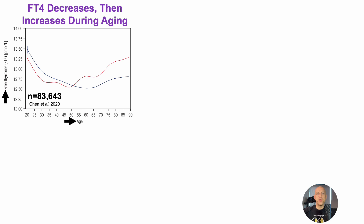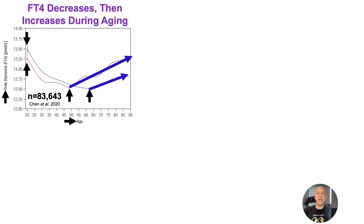Free T4 in youth: average levels for women (red) and men (blue) are around 13.25 and 13.5 picomolar, which then decline during aging until around the 50-to-60-year range, with values around 12.5 picomolar. Afterwards, we see an age-related increase up until 90 years for both women and men.